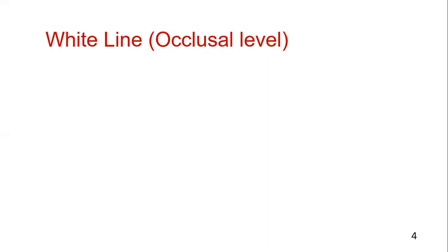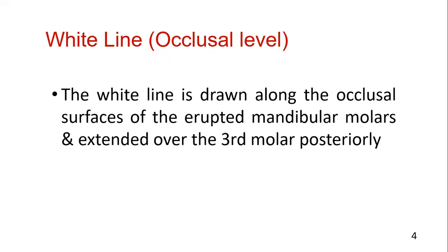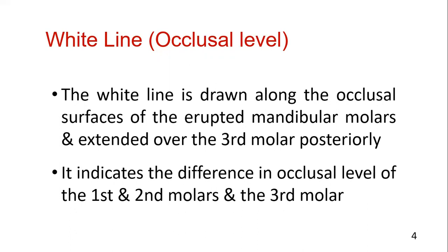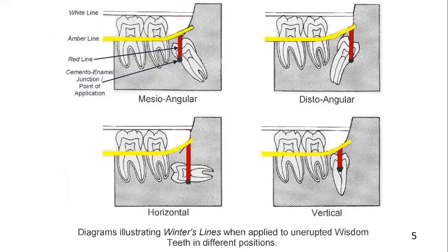First is the white line. It indicates the occlusal level of the first molar, second molar, and third molar, and the relative position of the third molar with respect to the first and second molar. This white line is drawn along the occlusal surfaces of the first molar and second molar, and then extended over the area of the third molar. So it indicates the difference in the occlusal level of the first, second, and third molar.